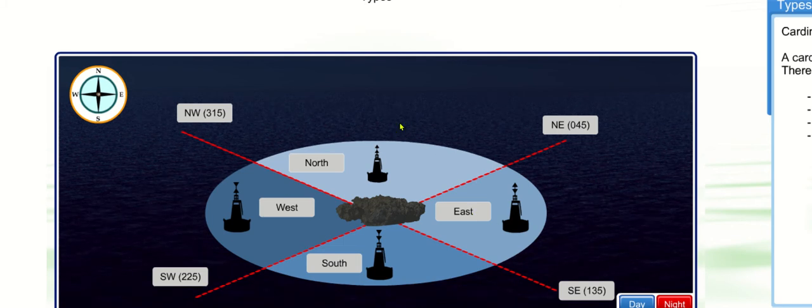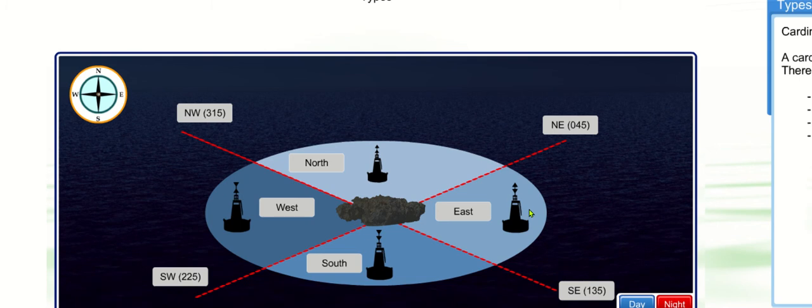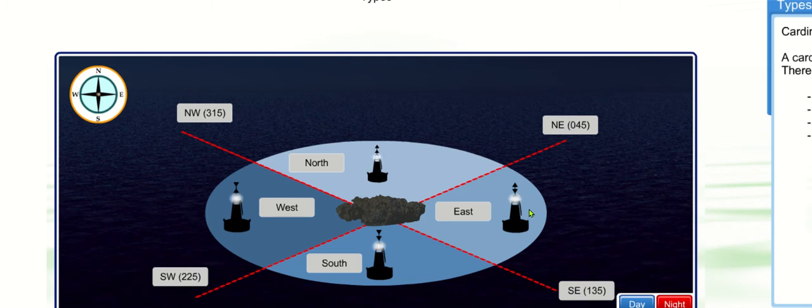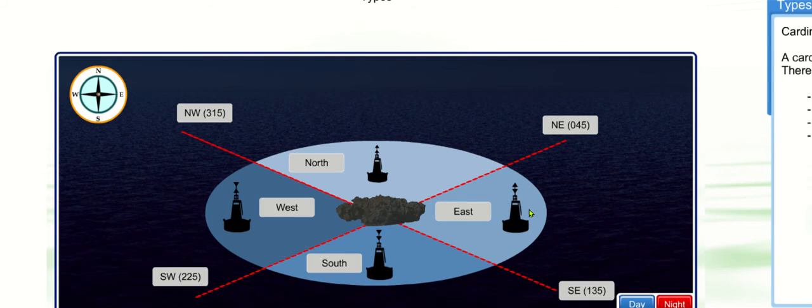So if we move into the convention of a clock, roughly we've got three, six, nine, and twelve. So east is quick flash three. So I want you to get into the habit of saying east cardinal buoy, white light, quick flash three in ten seconds, or very quick flash three in five seconds. Shorter period, so this one is either five or ten.